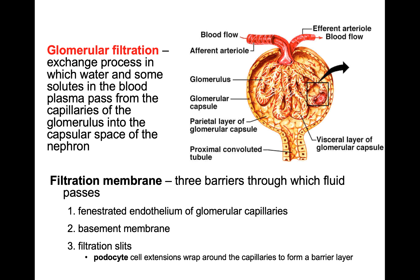Sitting on top of the capillary bed — on top of this glomerulus — are cells called podocytes. These are the yellow cells that have little leg extensions. The podocytes are considered the visceral layer of this capsule. The layer of tightly packed simple squamous epithelium is the parietal layer, and in between is the capsular space.